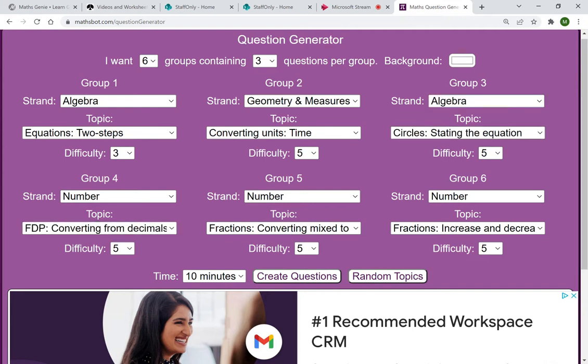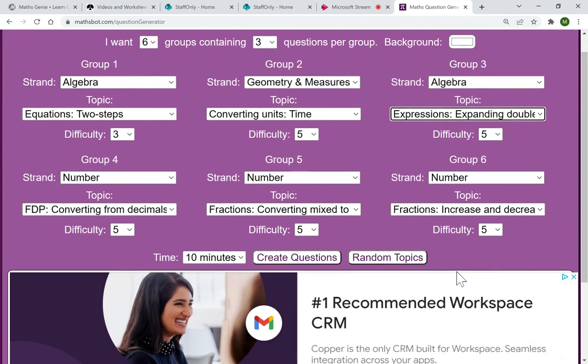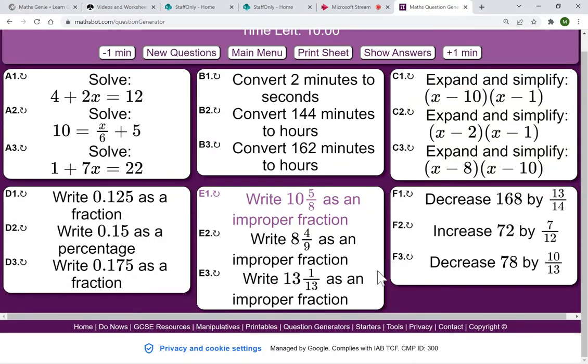You can choose as many of these as you can fit in. Geometry measuring units of time. Why not? Let me just change all of them so that we can see a good spread of them. Algebra. Love my algebra. Expand those. Expand those double brackets. You can give them a bit more time. Create question.